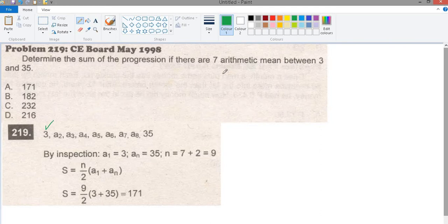There are 7 arithmetic mean between 3 and 35, so we have 1, 2, 3, 4, 5, 6, 7.